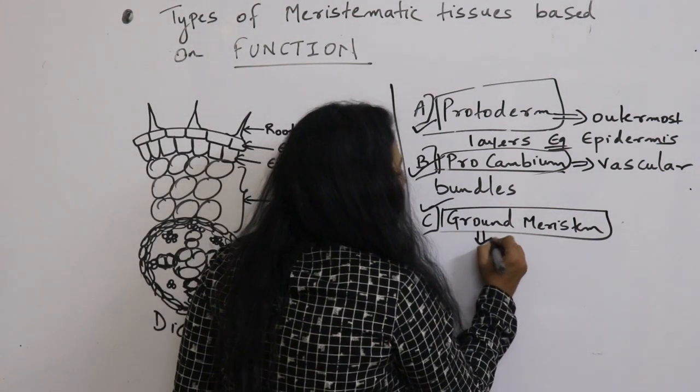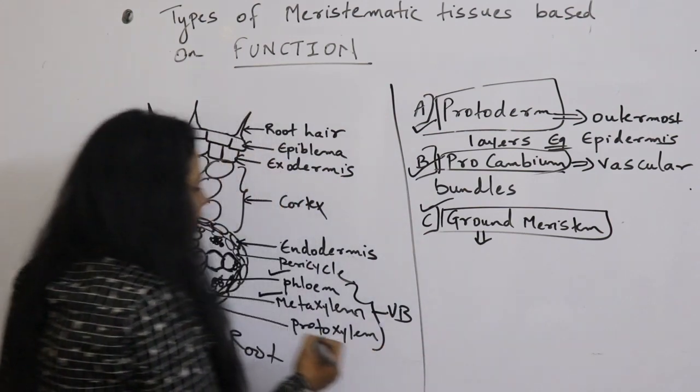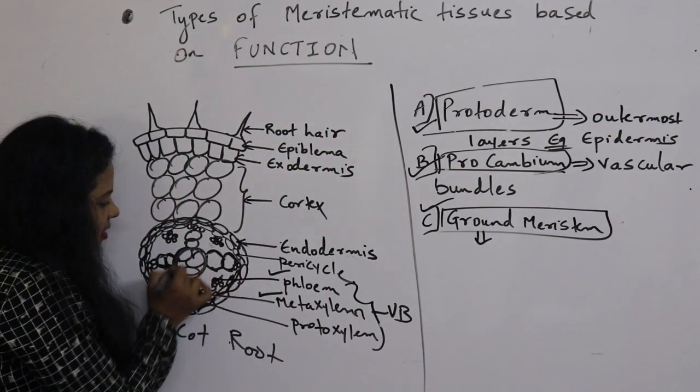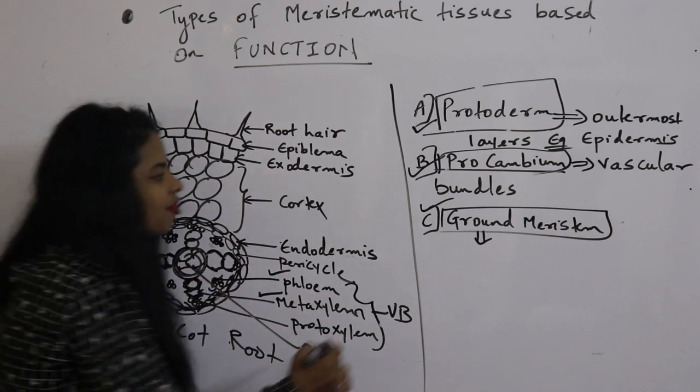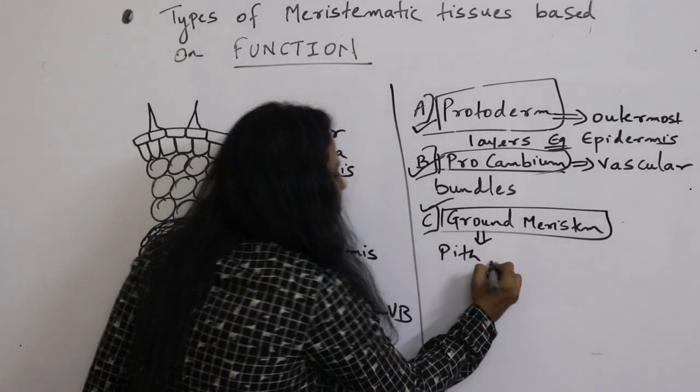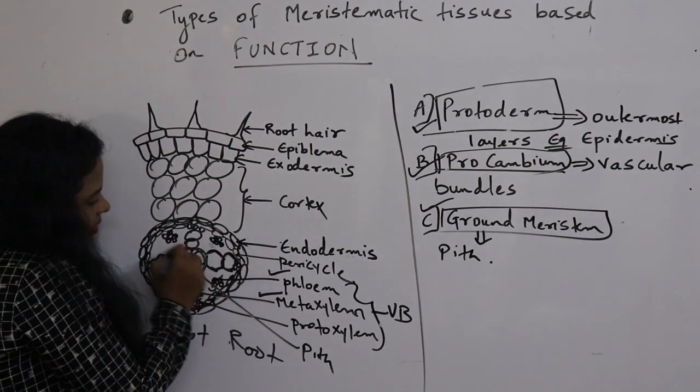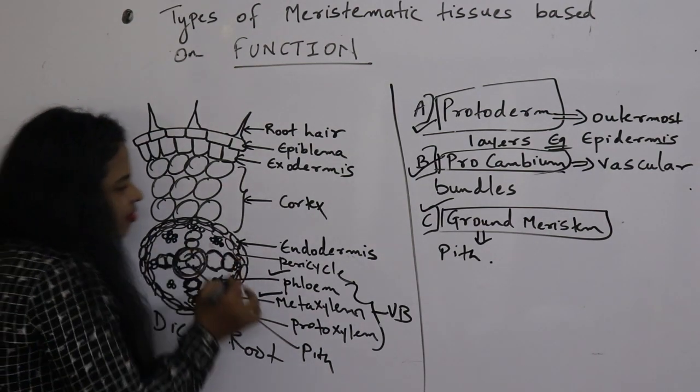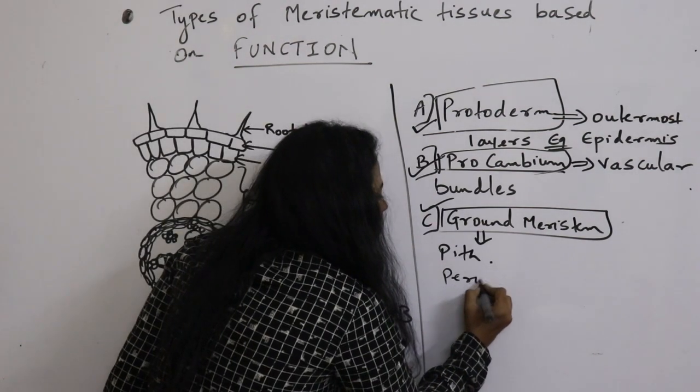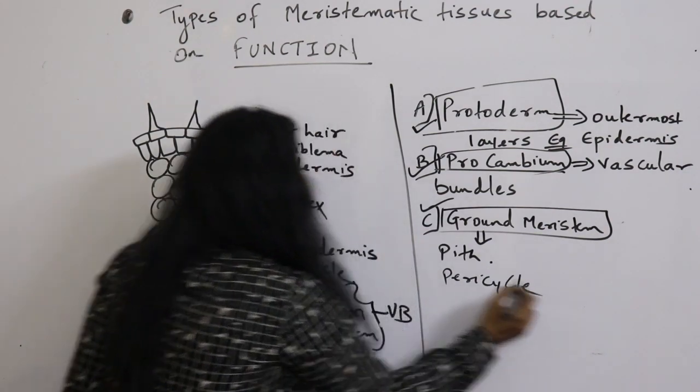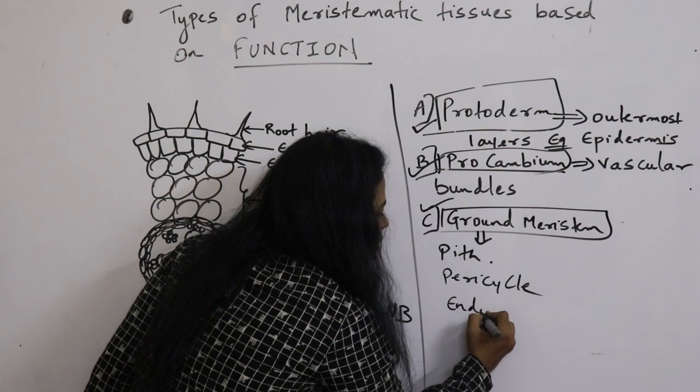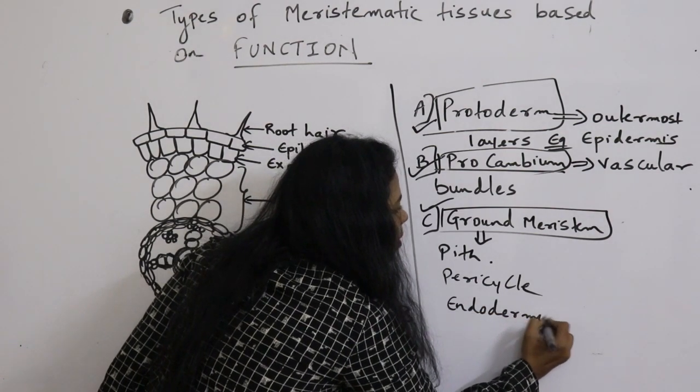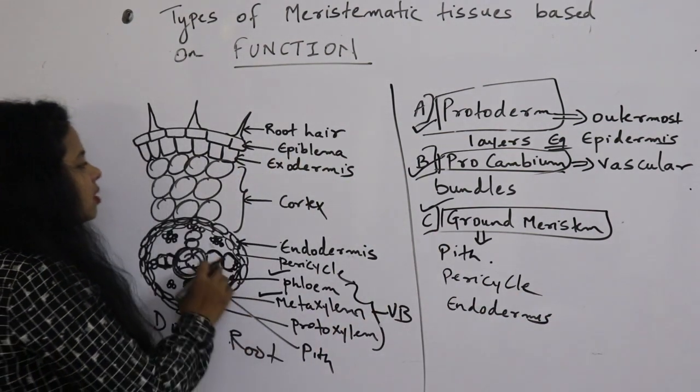Ground meristem divides and gives rise to parts like the central part, that is pith. The pith is formed from ground meristem. Then let us consider pericycle, which surrounds xylem and phloem. Endodermis is also formed from ground meristem.